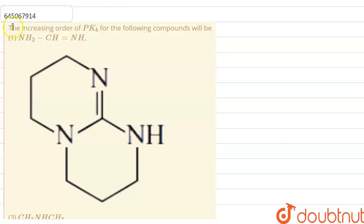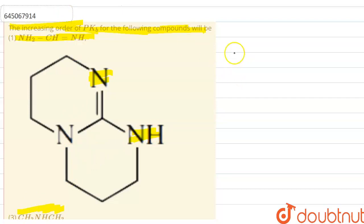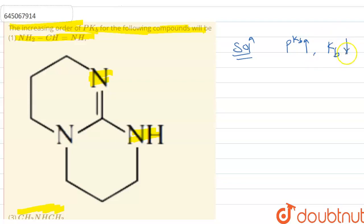Hello everyone, let's start the question. The increasing order of pKb for the following compounds — involving ammonia, NH2, and nitrogen-containing compounds. So how to find it? As you know, greater the value of pKb, lesser the value of Kb, meaning less basic strength.